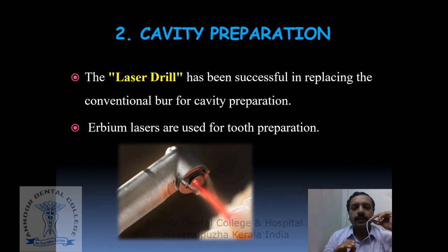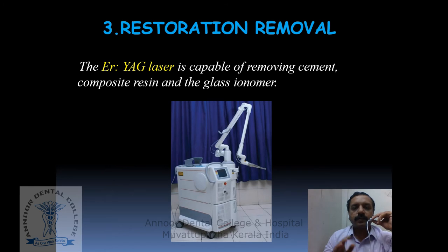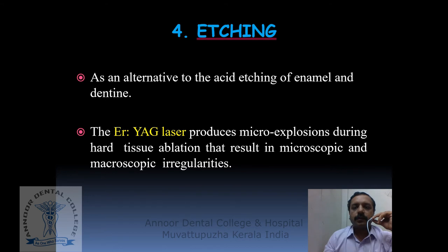Next application is cavity preparation. The laser drill has been successful in replacing the conventional bur for cavity preparation. Hard tissue lasers like the Erbium lasers are most commonly used for tooth preparation procedures. Next is restoration removal — the Erbium YAG laser is capable of removing cement, composite resin, and glass ionomer. Next is etching: as an alternative to acid etching of enamel and dentin, the Erbium YAG laser produces micro-explosions during hard tissue ablation resulting in microscopic and macroscopic irregularities. These micro-irregularities make the enamel surface micro-retentive and offer a mechanism of adhesion without the need for acid etching.